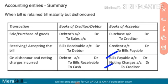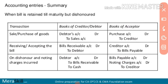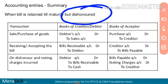In the books of B, on dishonour, the noting charges will be debited because this will be an extra burden on B. So the entry is: Bills Payable account debit and Noting Charges account debit, to Creditor account credit. The creditor is A. In this way, this is the dishonour entry in the books of both A and B.